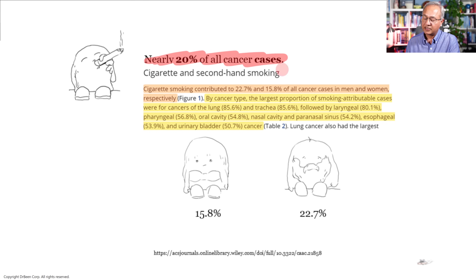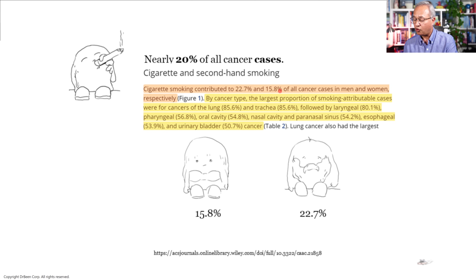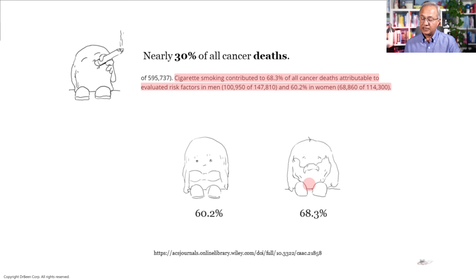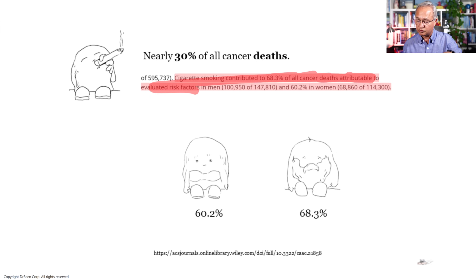Looking at smoking more closely: nearly 20% of all cancer cases in the US in 2019 were associated with smoking — 22.7% in men and 15.8% in women. By cancer type, the largest proportion of smoking-attributable cases were for lung and trachea cancers at 85.6%, followed by laryngeal, pharyngeal, oral cavity, nasal cavity, paranasal sinuses, esophageal, and urinary bladder cancers.